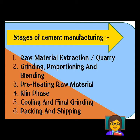Third, preheating of raw materials during the process. Fourth, the kiln phase where all chemical reactions occur to obtain the optimum product. Fifth, cooling again after the kiln phase. Sixth, final grinding — any minute gravels that escaped the earlier processes are crushed again — and then the cement is packed and shipped.